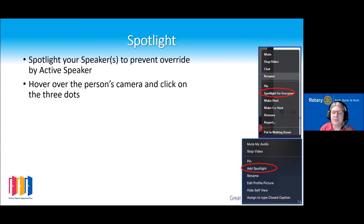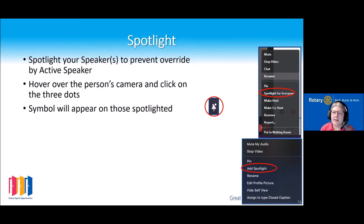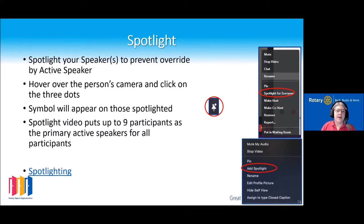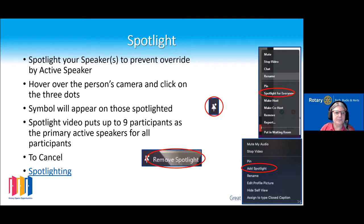You hover over the person's camera or use the options on the participants panel and select spotlight. A symbol will appear next to their camera showing they've been spotlighted. The host can spotlight up to nine participants for a session, which is very useful for multiple speakers or a panel. You just click on the person to remove the spotlight.